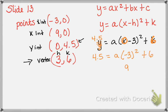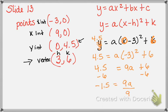Now we're going to solve. So 4.5 equals a times 0 minus 3 squared plus 6. Simplifying: negative 3 squared gives 9, so 9a plus 6 equals 4.5. Subtracting 6 from both sides gives negative 1.5 equals 9a. Dividing by 9, I end up with 0.16666..., which we should recognize as negative 1/6. So a is negative 1/6.